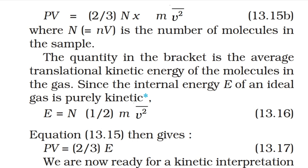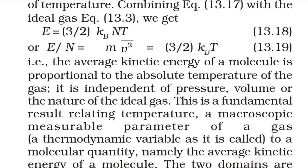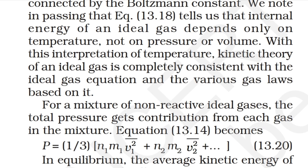This gives PV = (2/3)·E. Combining with the ideal gas equation, we get E = (3/2)·kB·N·T, or E/N = ½m·v̄² = (3/2)·kBT. That is, the average kinetic energy of a molecule is proportional to the absolute temperature of the gas. It is independent of pressure, volume, or the nature of the ideal gas. This is a fundamental result relating temperature — a macroscopic thermodynamic variable — to molecular average kinetic energy. The two domains are connected by the Boltzmann constant.